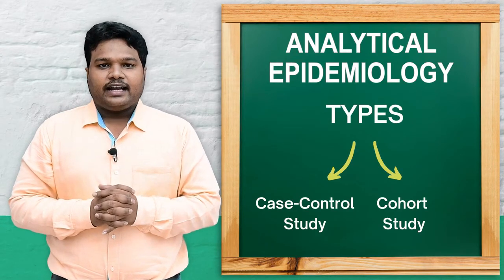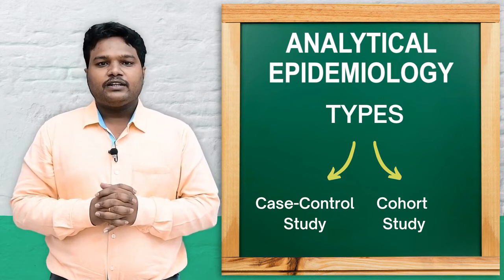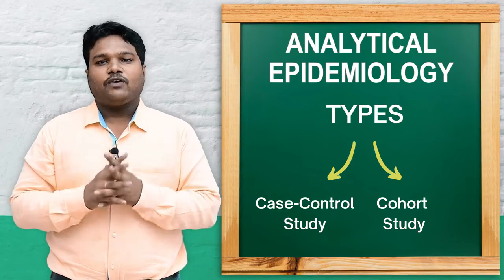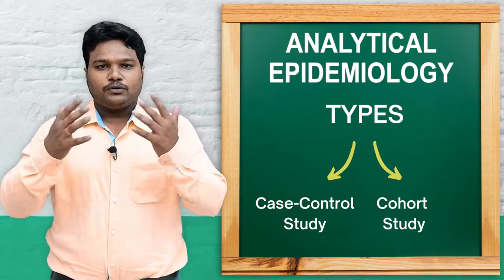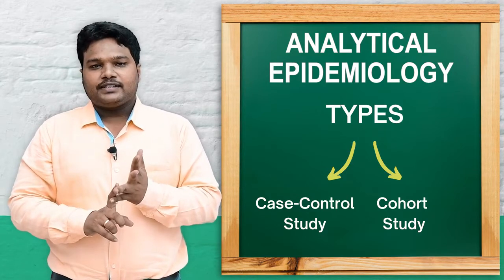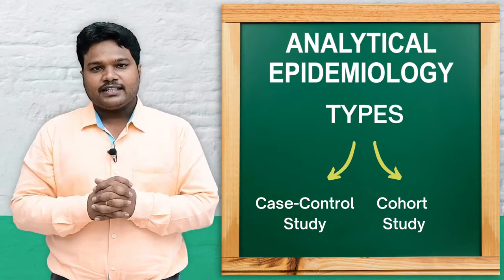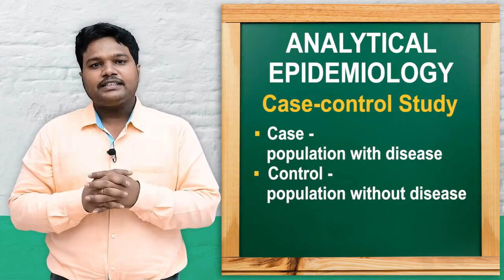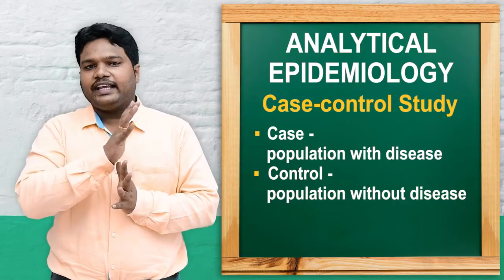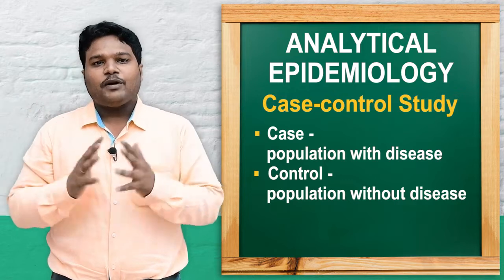Analytical epidemiology is classified into case control study and cohort study. Case control study is also called a retrospective study. In a case control study, you select two groups: cases, meaning those having a particular illness or disease, and controls, meaning those who are not having any illness or disease.